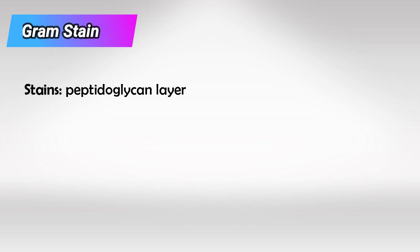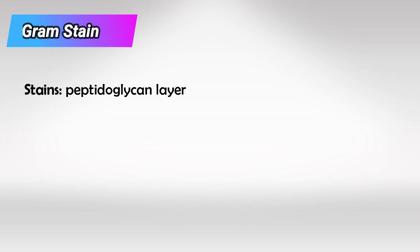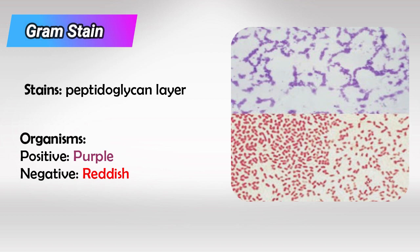Next we have Gram stain, which stains the peptidoglycan layer. After using the stain, purple cells mean Gram-positive and red cells mean Gram-negative.